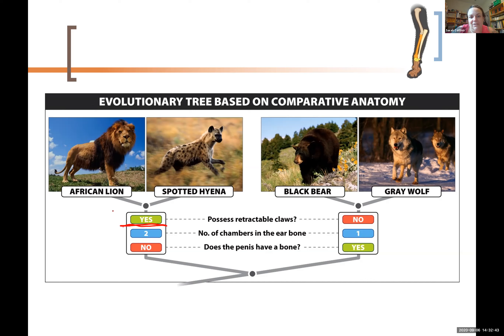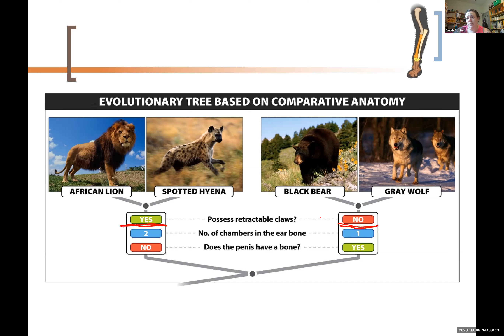One characteristic is retractable claws. Cats have a funny little joint at the tip of their finger that lets them curl their claws back. Lions and hyenas both have the ability to retract their claws — handy for grip or attack, but also to put them away when not needed. None of the dog species, including wolves, have this; bears don't either. This is why your dog scratches you even when they don't mean to — they can't put their claws away. If your cat scratches you, they're doing it on purpose.